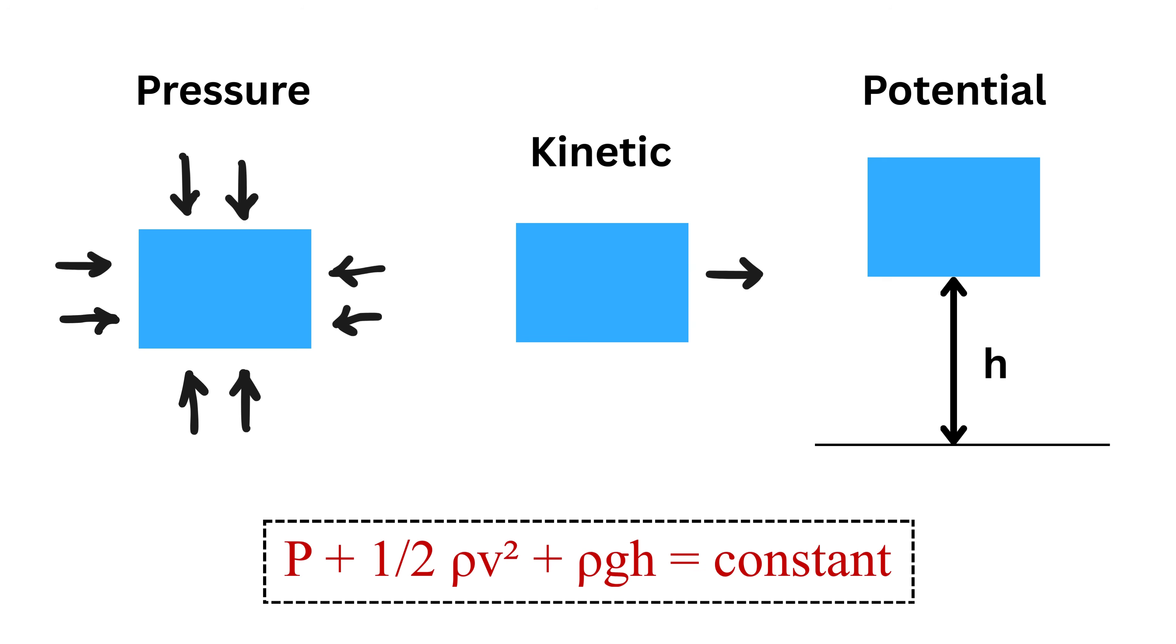In this case, the energy in the fluid is stored in three ways: pressure energy, kinetic energy which comes from speed, and potential energy which comes from height.